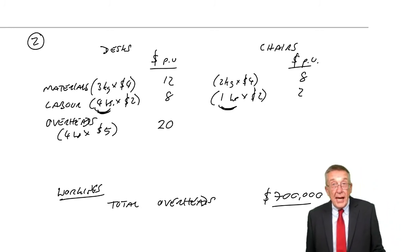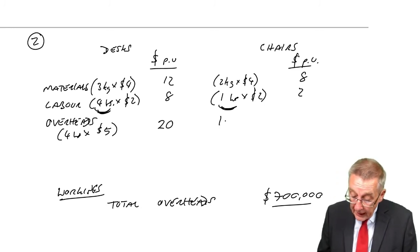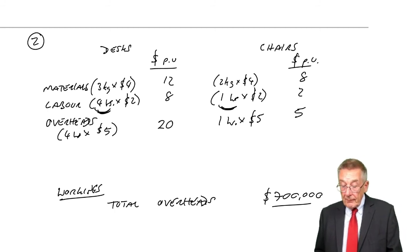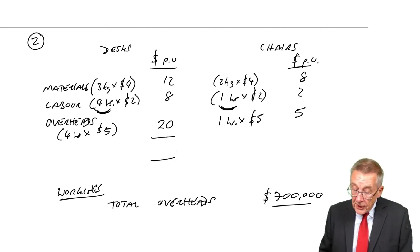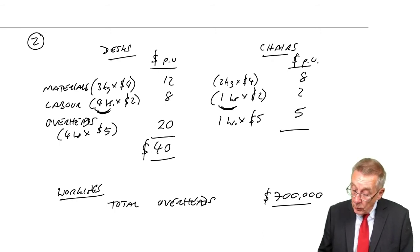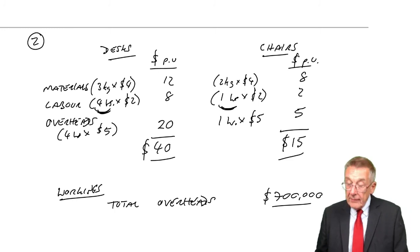How many hours does a chair spend in the factory? One hour. Each hour is costing $5 in overheads, $5. And so the total cost? $40 for a desk and $15 for a chair.